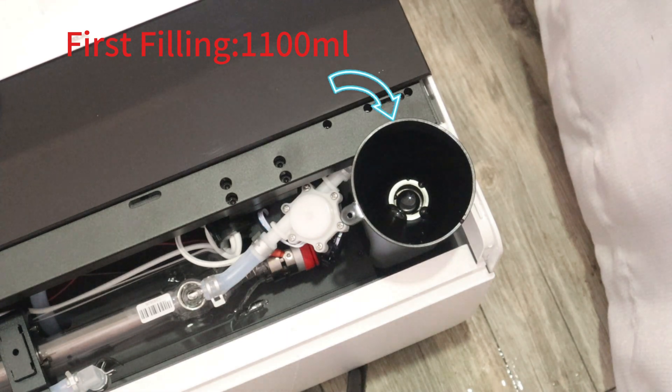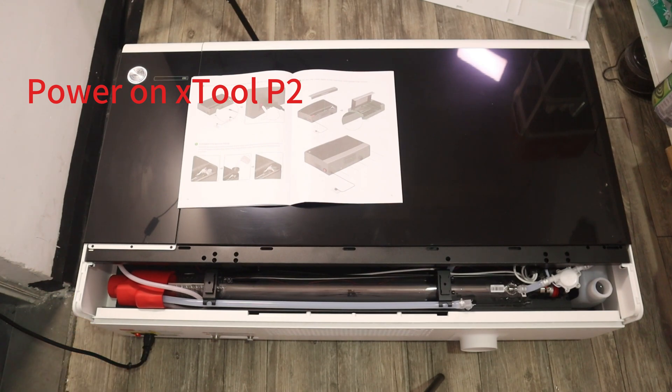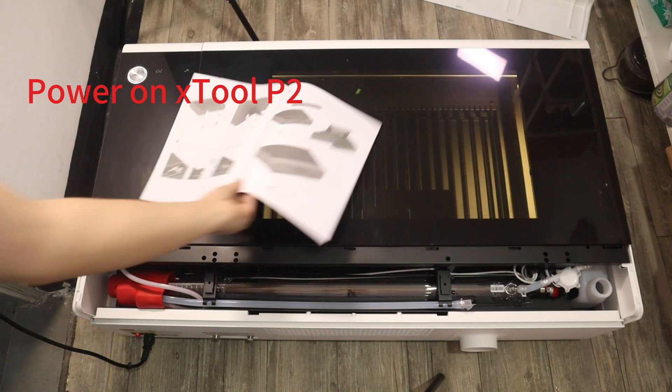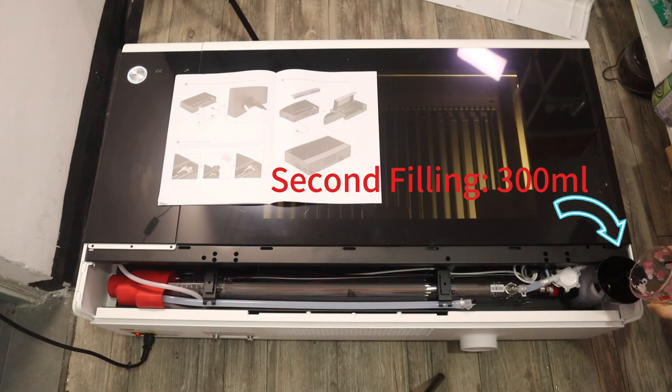Then, power up the X2P2 and allow the pure water to circulate into the glass tube. Wait about 30 seconds before making the second fill, which takes about 300 ml of pure water.